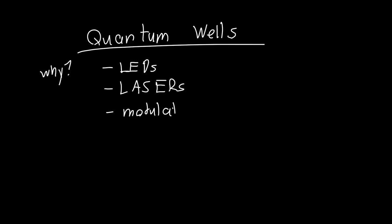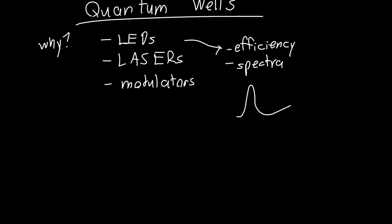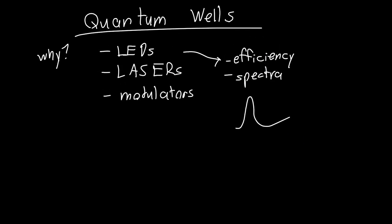...and many more things. They're used to massively increase the efficiency of these devices as well as control the spectra of these devices, so determining for example which wavelengths a laser will emit at or which wavelengths an LED will emit and what that spectra actually looks like. So what is a quantum well, how do we understand it?